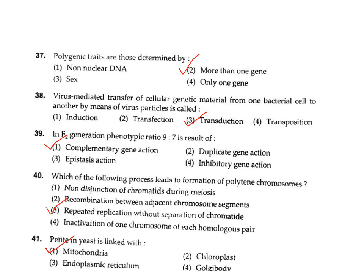Question 41: The petite form in yeast is linked with what? The petite form is linked with mitochondria — these strains arise due to mitochondrial mutations. Correct answer Option 1.